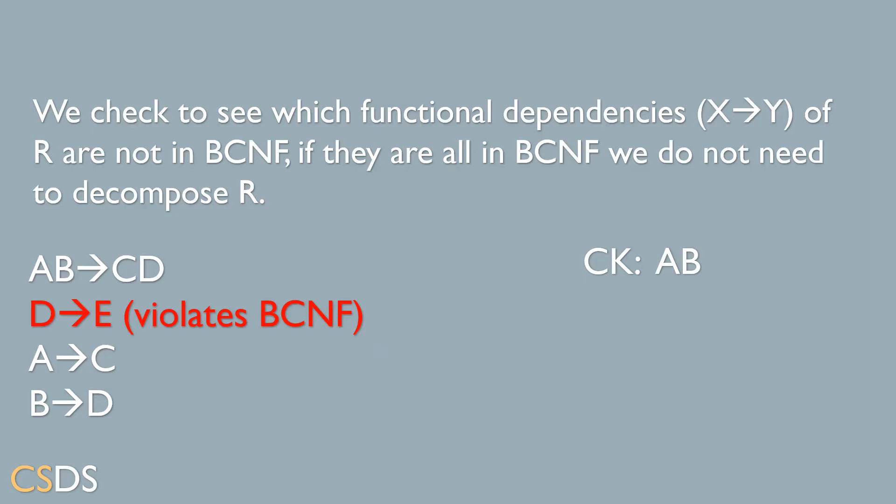According to BCNF conditions, we need the left-hand side X of the functional dependency to be the candidate key of the relation. Our first functional dependency, AB goes to CD — AB is the candidate key of R, so AB→CD holds BCNF.